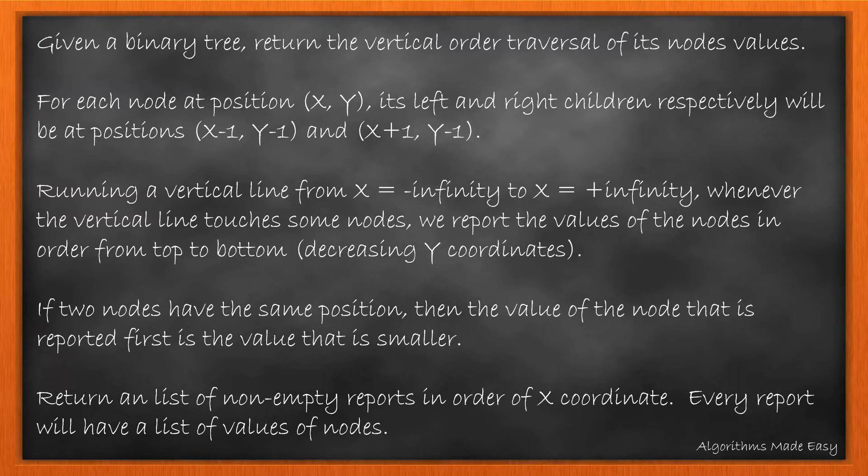If two nodes have the same position, then the value of node that is reported first is the value that is smaller. Return a list of non-empty reports in order of x-coordinate, where every report will have a list of values of nodes.